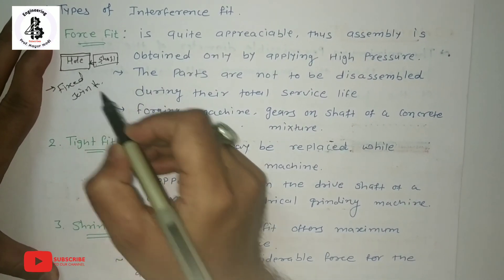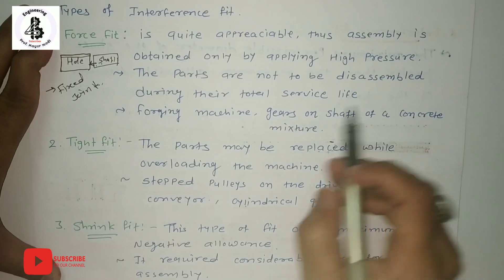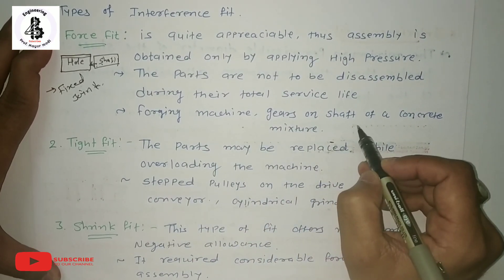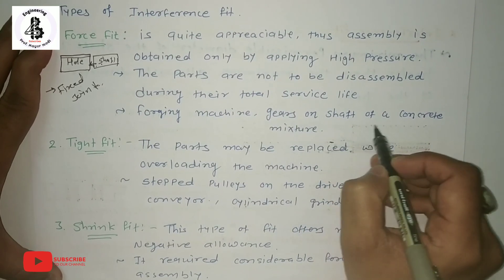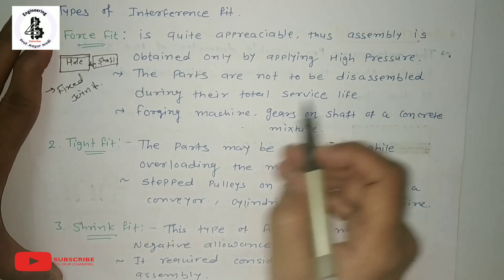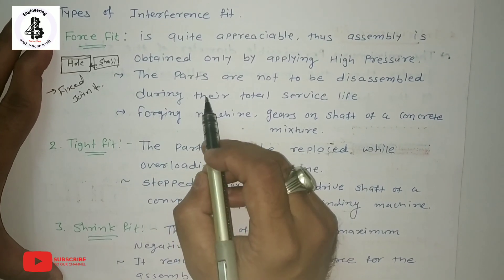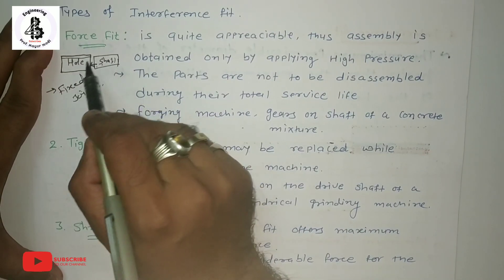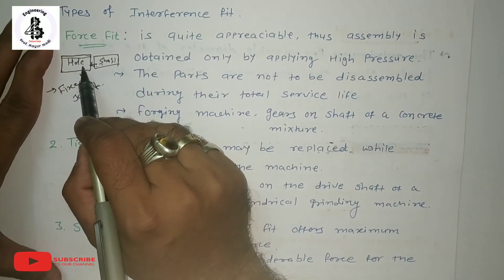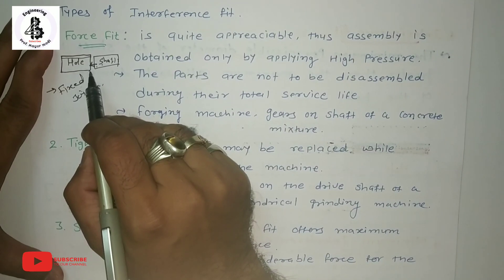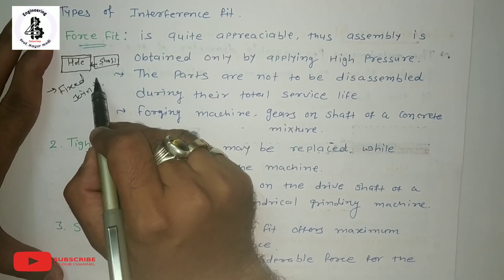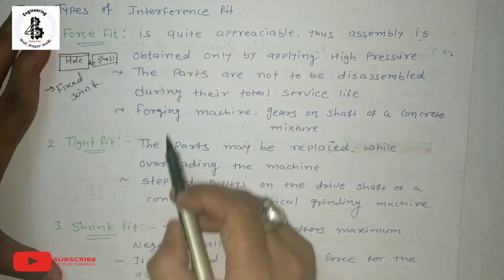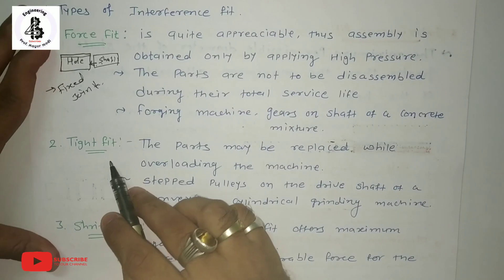A force fit joint can never be broken during its service life. Examples include gears in forging machines and gears onto the shaft of concrete mixers. Once you assemble component A with component B — the shaft with the hole — it never disengages or disassembles during its total life. That is called a force fit.